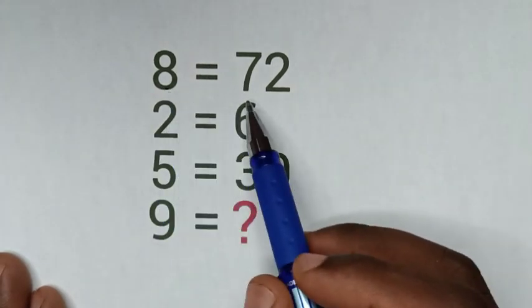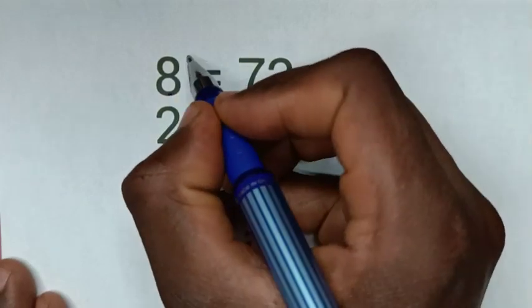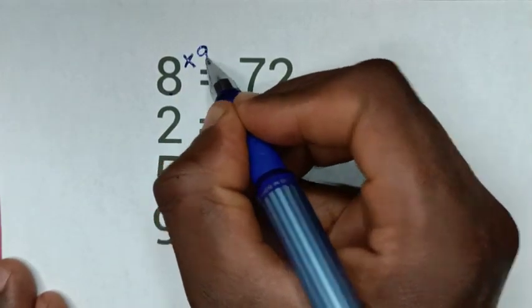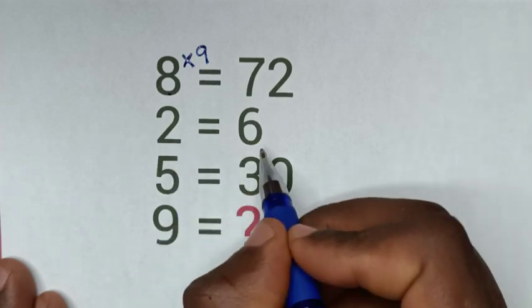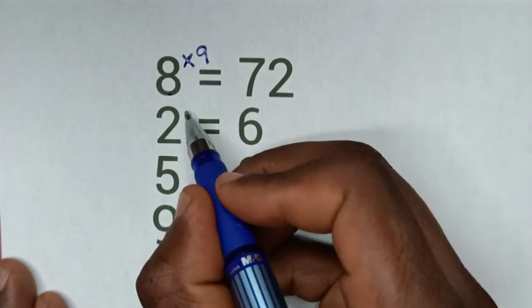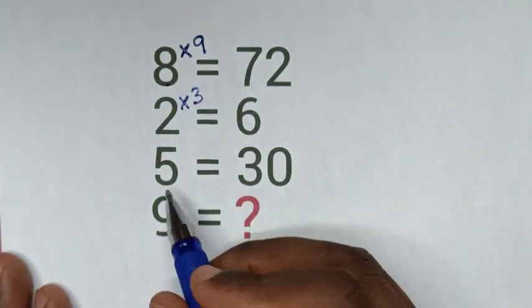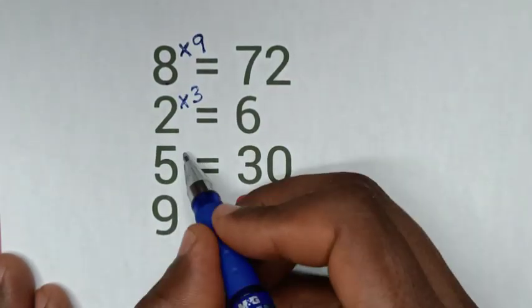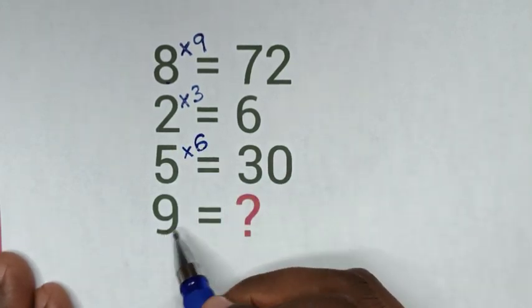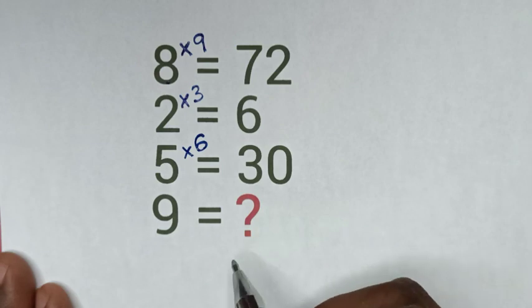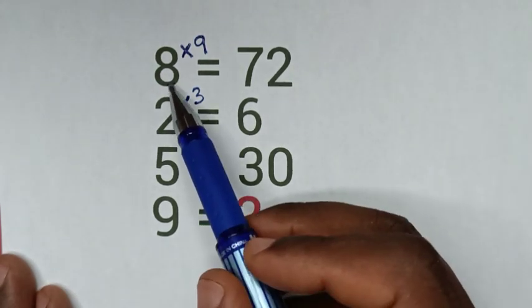From 8 to give 72, it's 8 times 9, so 8 times 9 equals 72. And 2 to give 6 is 2 times 3 equals 6. And 5 to give 30 is 5 times 6, which equals 30. So what does 9 times to give the question mark?